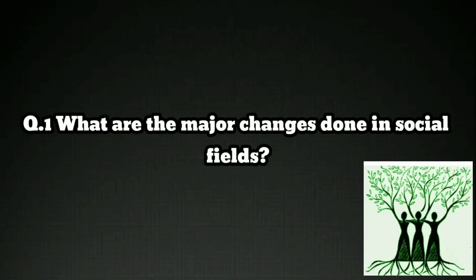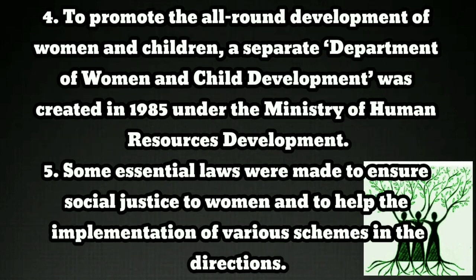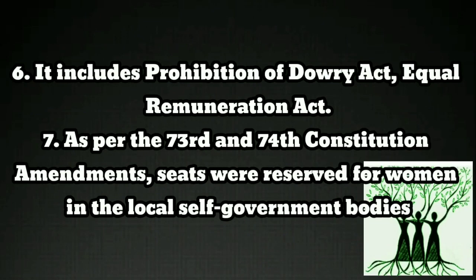Question: What are the major changes done in the social field? Answer: In this period, there are various major changes in the social field in India. Some changes are related to the issue of empowerment of women, while others are related to policies regarding the uplift of the deprived sections of society. To promote the all-round development of women and children, a separate department of Women and Child Development was created in 1985 under the Ministry of Human Resources Development. Essential laws were made to ensure social justice to women, including the Prohibition of Dowry Act and the Equal Remuneration Act. As per the 73rd and 74th Constitution amendments, seats were reserved for women in local self-government bodies.